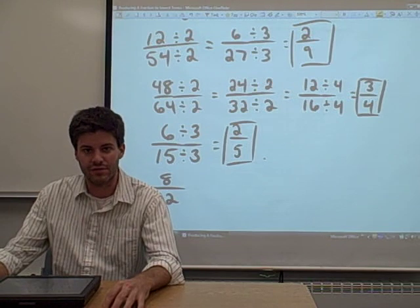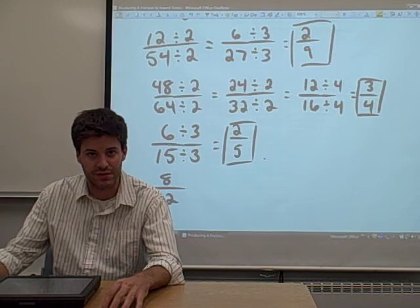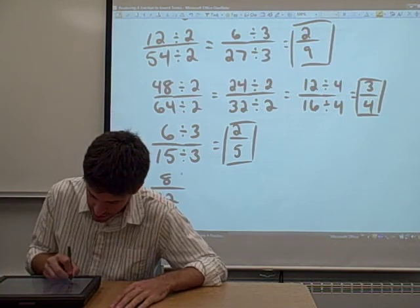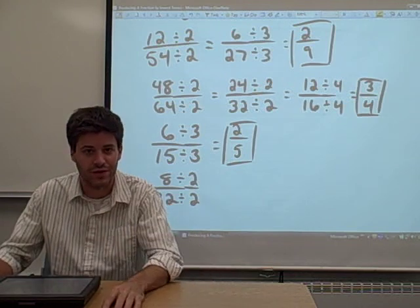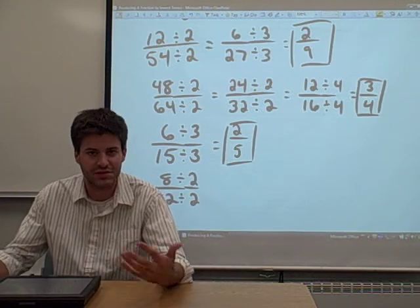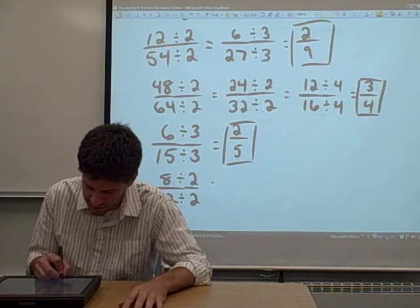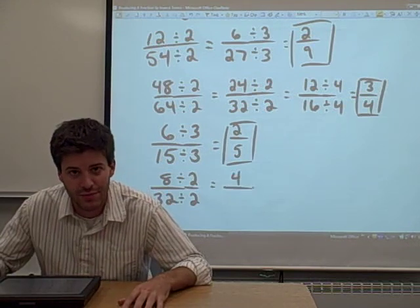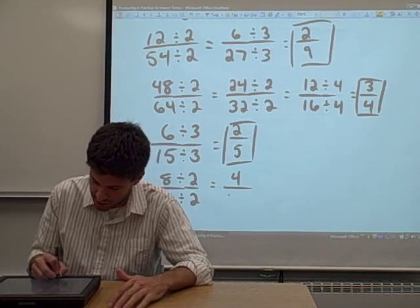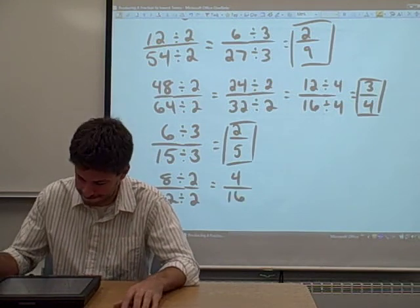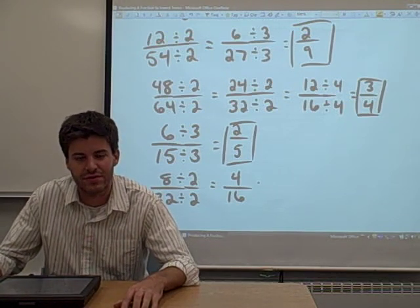How about 8 over 32? I might look at that for a second. You could maybe divide it by 2. Of course there's more than one way to do this problem, but we notice that 2 divides both 8 and 32 evenly. So let's see what we get. 8 divided by 2 equals 4. 32 divided by 2 equals what? 16? Yeah.